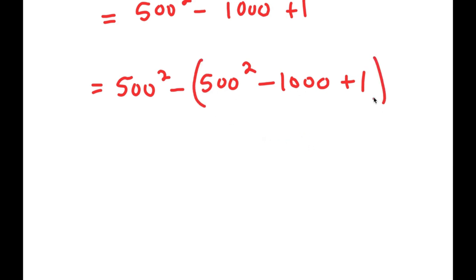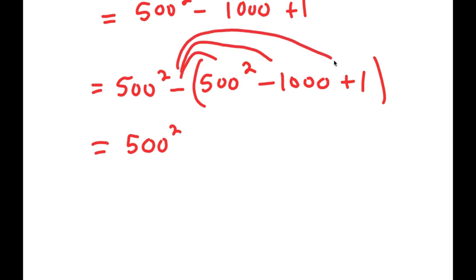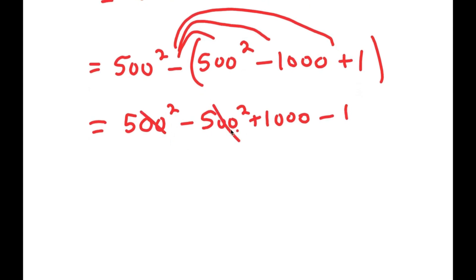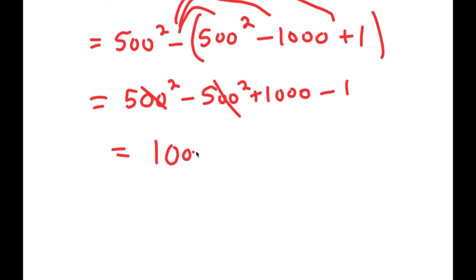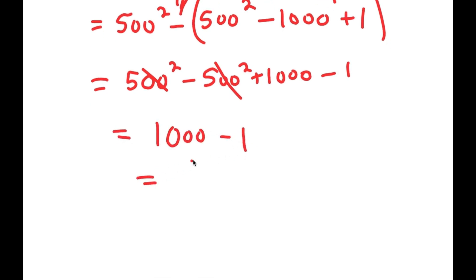So now this is equal to 500 squared, and we distribute the negative sign — that's like multiplying by negative 1. Negative 1 times 500 squared is negative 500 squared, negative 1 times negative 1,000 is positive 1,000, and negative 1 times positive 1 is negative 1. The two 500 squared terms cancel, leaving 1,000 minus 1, which equals 999.